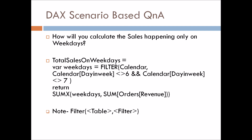We then pass that filtered table into the SUMX function and calculate the sum of revenue for those weekdays. For weekends, you make a slight change in the filter: use 'Calendar Day In A Week' equals 6 OR 'Calendar Day In A Week' equals 7. In this way you can modify the statement to calculate sales happening only on weekends.